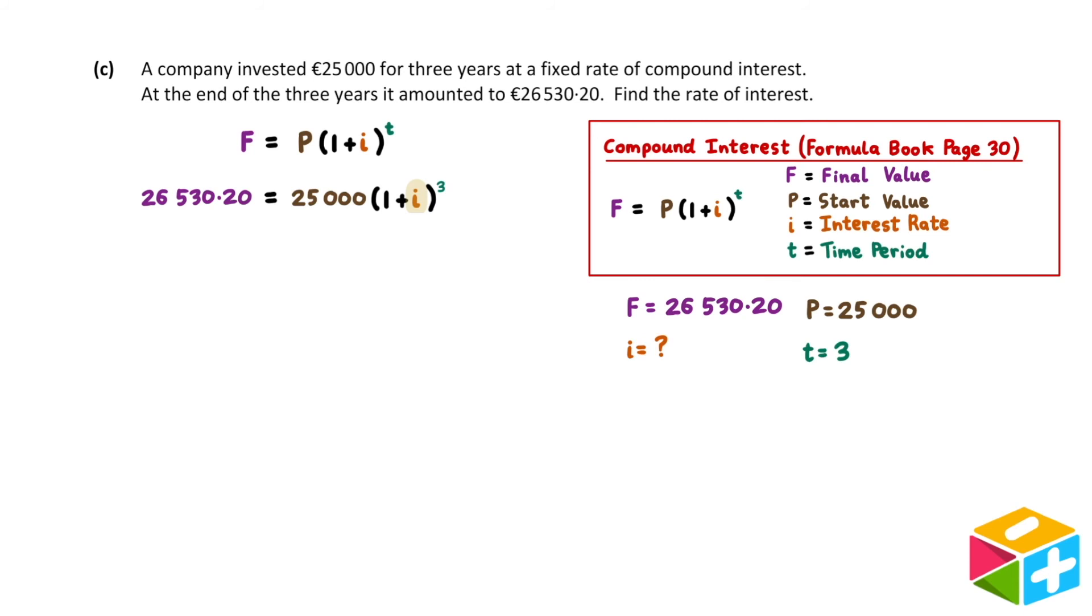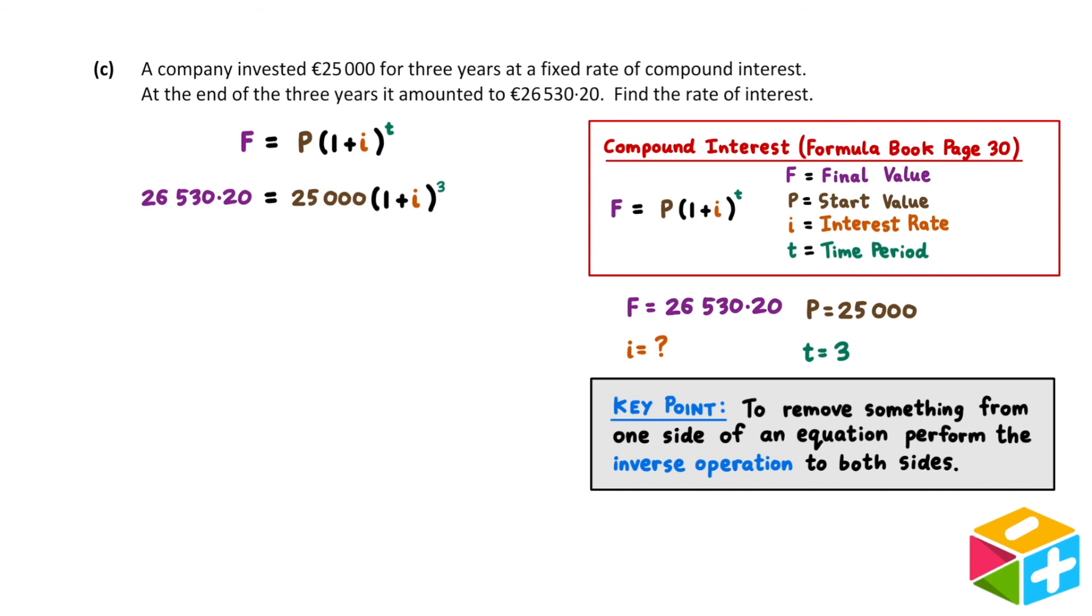Unfortunately, this will take a bit of work, since there's a lot of things around the i on the right-hand side of the equation. The key point to remember is the following: to remove something from one side of an equation, perform the inverse operation to both sides. So one by one, we're going to remove everything from the right-hand side until we're just left with the i. To begin, we'll remove the 25,000. This 25,000 is being multiplied by the 1 plus i to the 3. The inverse of multiplication is division. So what we'll do is we'll divide both sides by 25,000.